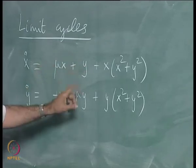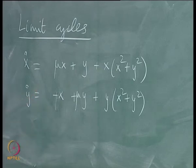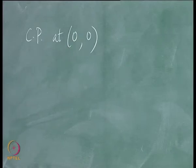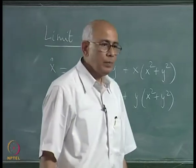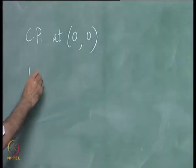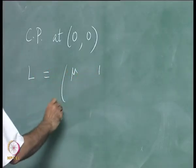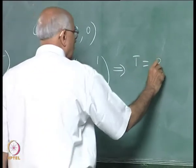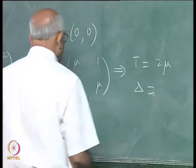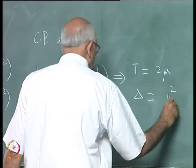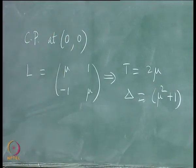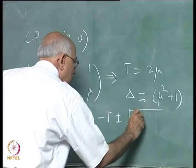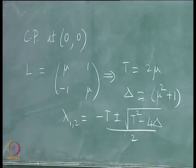The first portion is the linear part and that is the nonlinear part. It is immediately obvious that you have a critical point at (0,0), since both equations vanish there. If you linearize near the origin, the L matrix is mu, 1, -1, mu, which implies the trace is equal to 2 mu and the determinant is equal to mu squared plus 1. The eigenvalues lambda_1,2 are equal to minus t plus or minus square root of t squared minus 4 delta divided by 2 plus t.